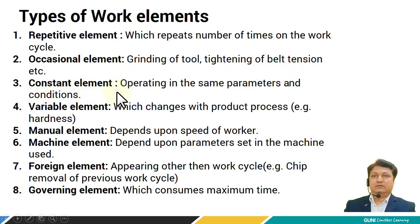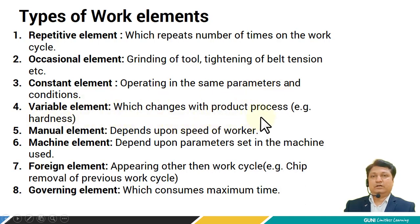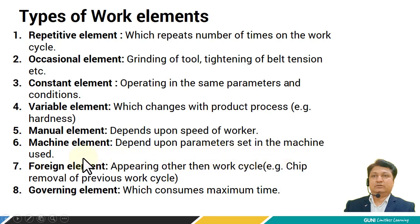Constant elements operate under the same parameters and conditions. The variable elements are those which change with product or process, for example hardness, diameter of the shaft, taper turning, etc. Manual element depends upon the speed of the worker. Machine elements depend upon the parameters set in the machine used. Foreign elements appear other than in the work cycle, like chip removal from the previous work cycle.